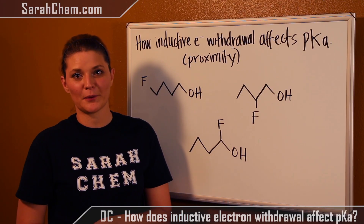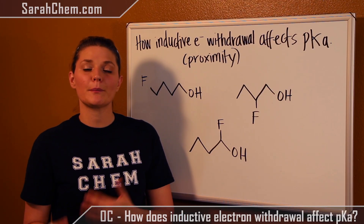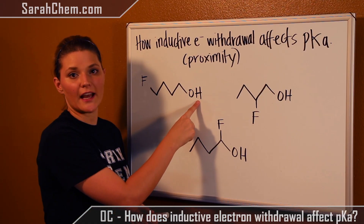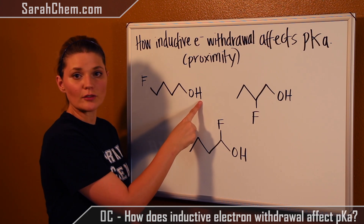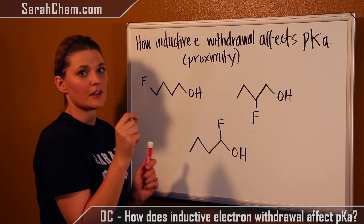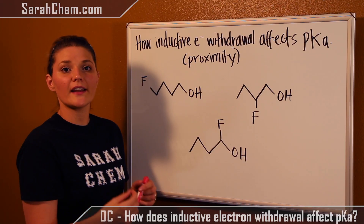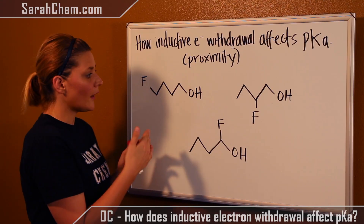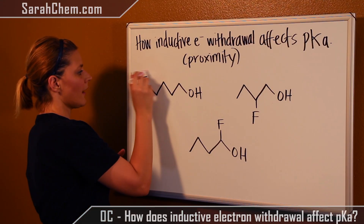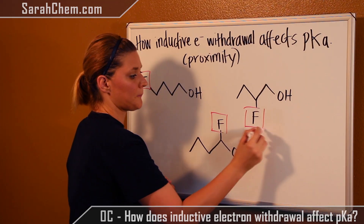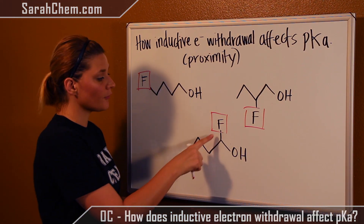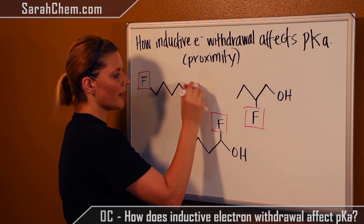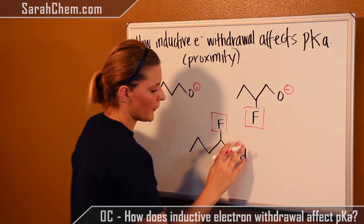So let's take a look at one more example. In this case we're going to focus on the proximity of the atom. Just as in the other cases, we have an oxygen with a hydrogen attached to it. This oxygen is going to lose the hydrogen and when it does, it will develop a negative charge. All three compounds have a very electronegative fluorine in them — the only difference is how close that fluorine is to the oxygen that will develop the negative charge. Let's remove all of the hydrogens and add the negatives in their place so we can have a better visual.